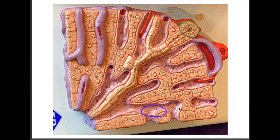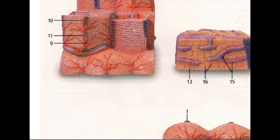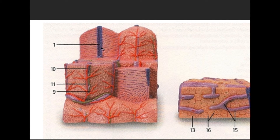Looking at different angles of the model: number one is your central vein. Number ten is an interlobular artery. Number eleven, a little hard to see behind the artery, is the interlobular vein. Number nine is your interlobular bile duct — that's a little tricky to see.